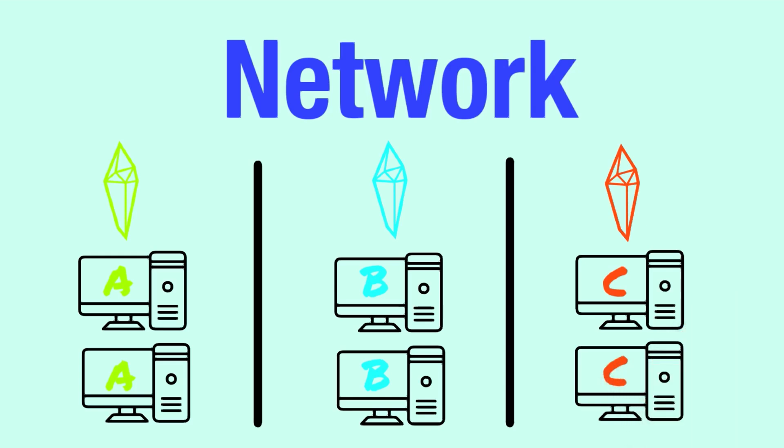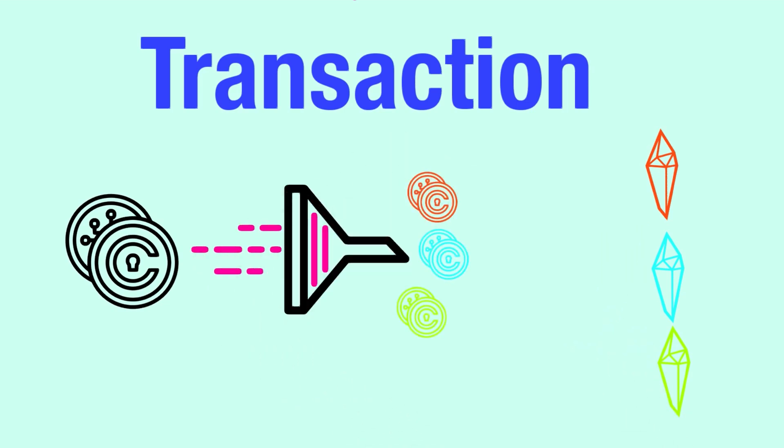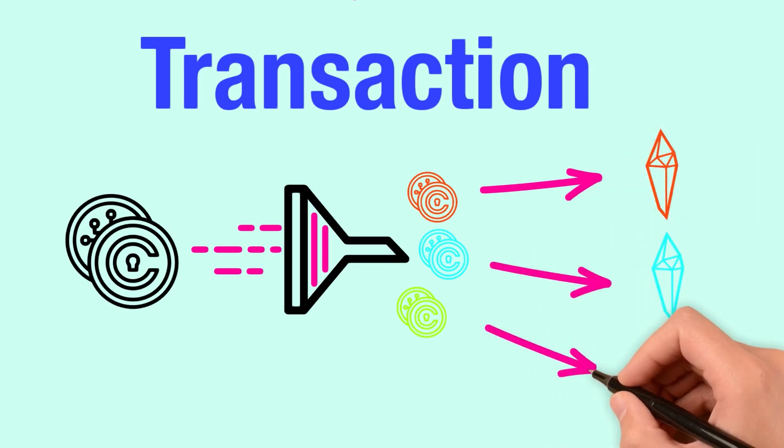Transaction sharding, also referred to as compute sharding, allocates specific transactions to be validated by specific shards. Although this reduces the amount of computations, each node must still receive the validated transactions and update the state.